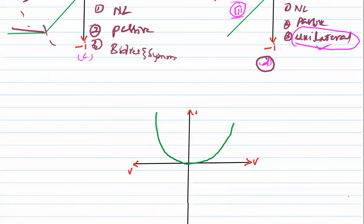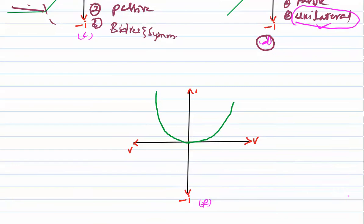For the fifth figure: the first quadrant acts as passive, the second quadrant acts as active. Globally it is going to be active. It is unilateral and non-linear. Thanks for watching, have a nice day.